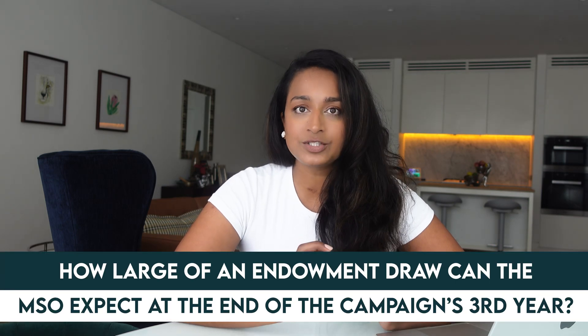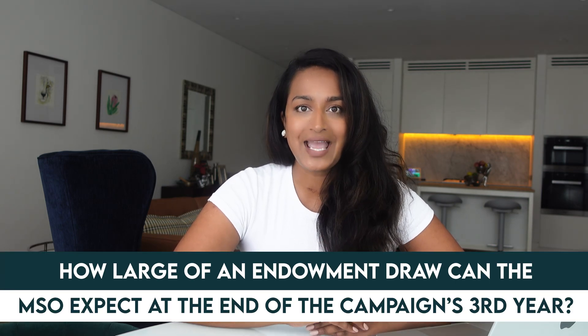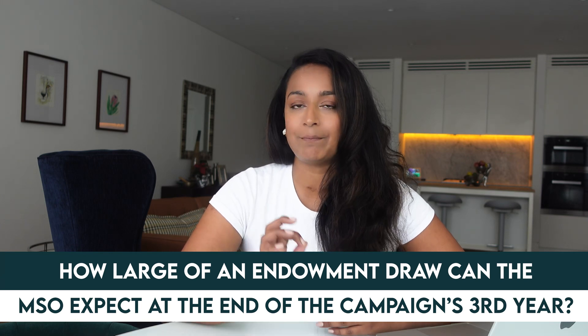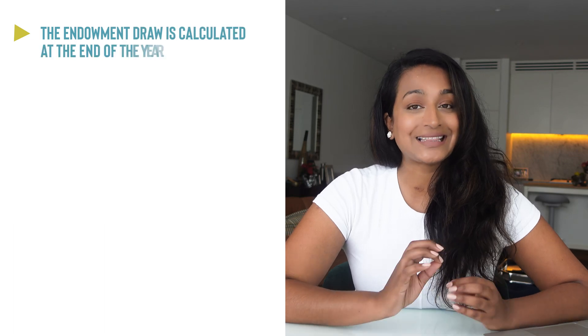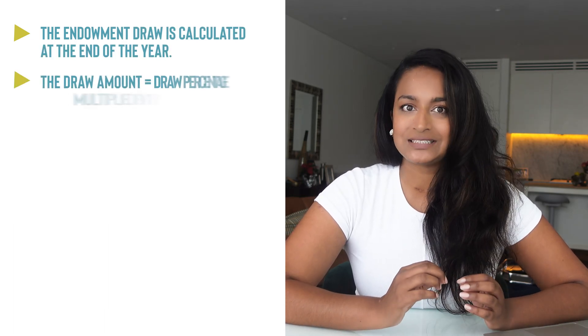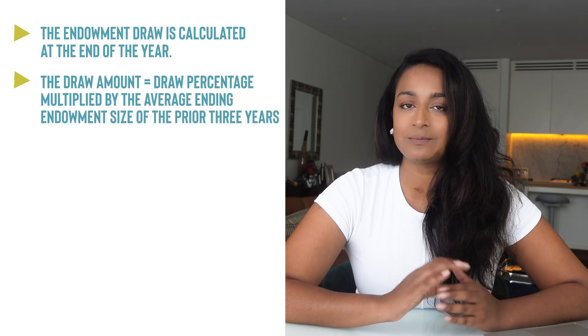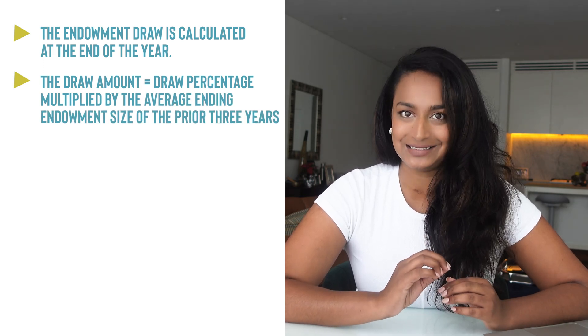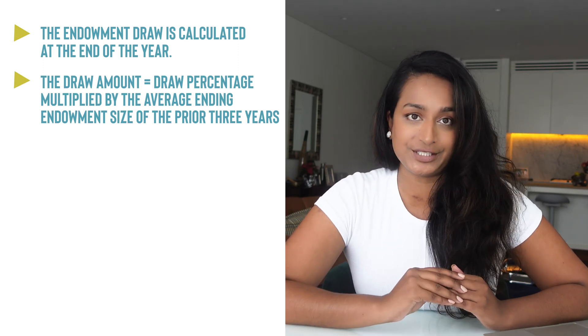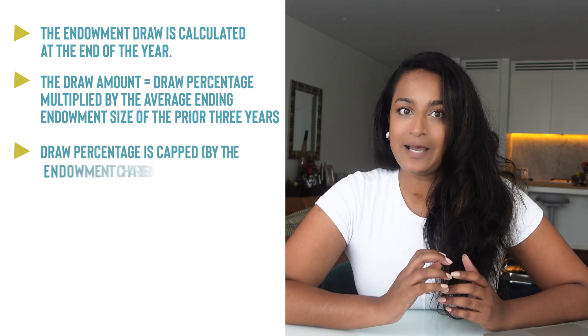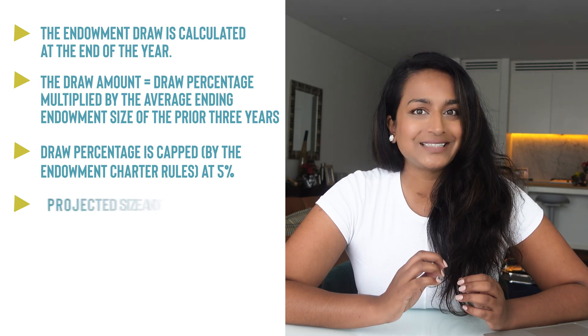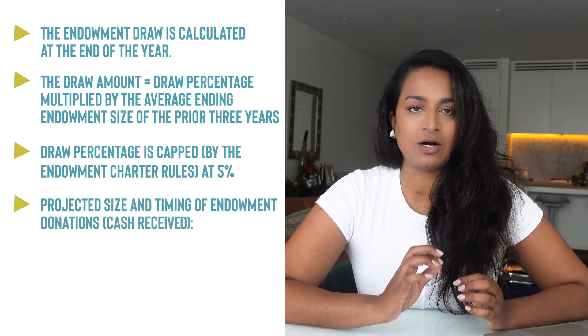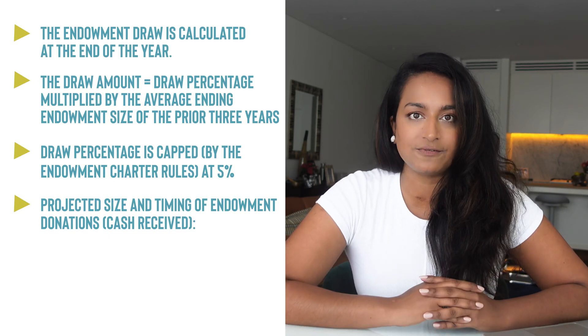Given the following information, garnered from the MSO's fundraising and finance staff, how large of an endowment draw can the MSO expect at the end of the campaign's third year? The endowment draw is calculated at the end of the year, and the draw amount is equal to the draw percentage multiplied by the average ending endowment size of the prior three years. The draw percentage is capped at 5%.